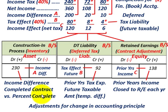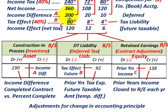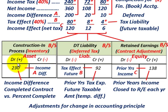For Construction in Process, we take the total income difference between the completed contract and percentage of completion methods across the three years: $200,000 in X1, $20,000 in X2, and $10,000 in X3, totaling $230,000. Because we changed to percentage of completion and have increased income, we debit Construction in Process by $230,000.